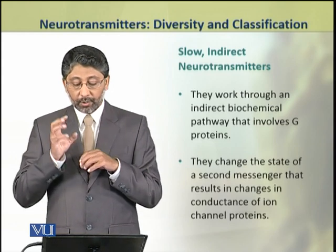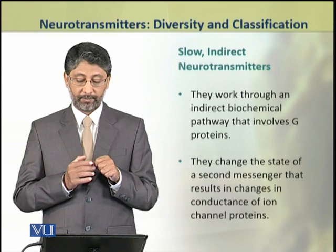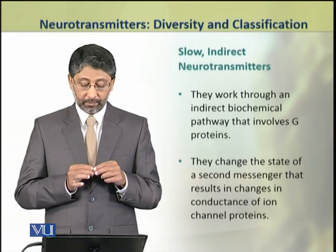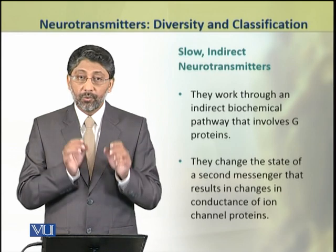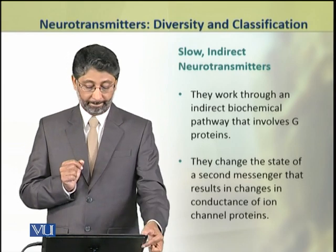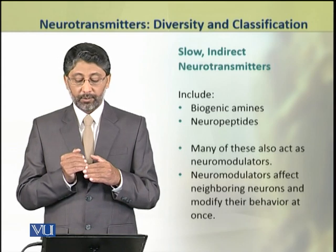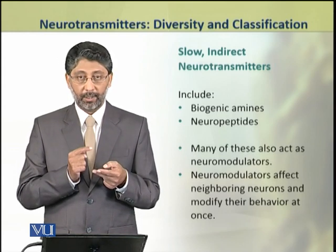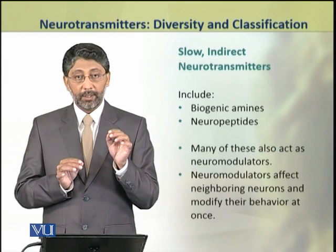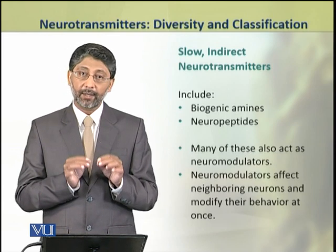The slow, indirect neurotransmitters work through indirect biochemical pathways that involve G-proteins. These slow, indirect neurotransmitters are linked to biogenic amines and neuropeptides. Many of the neurotransmitters involved in slow, indirect transmission also act as neuromodulators.